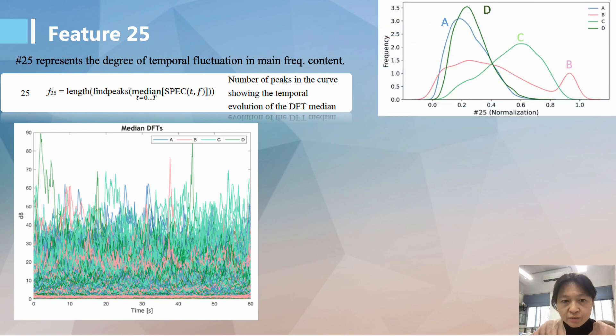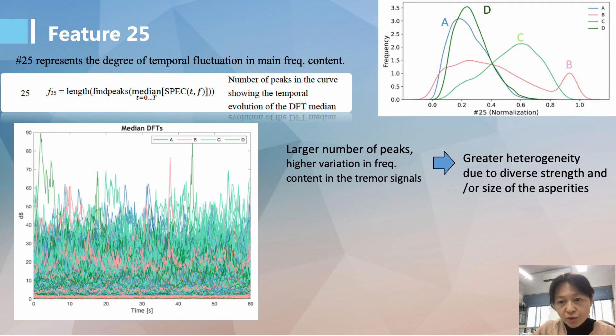We interpret the larger numbers of peaks as higher variation in frequency content in the tremor signals, and likely indicating greater heterogeneity due to the diverse strengths and or size of the asperities as shown by the two models here.